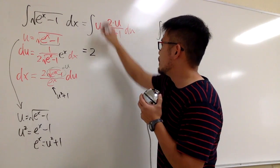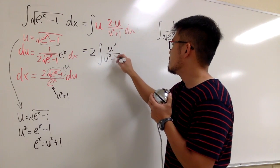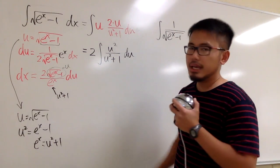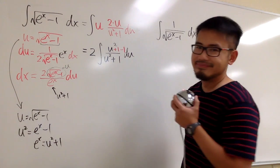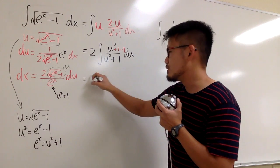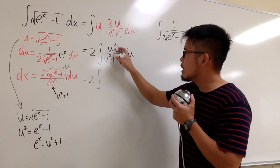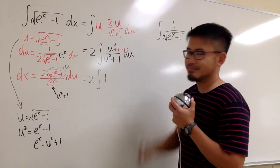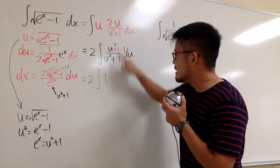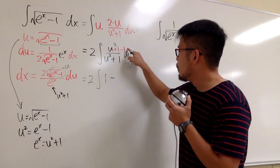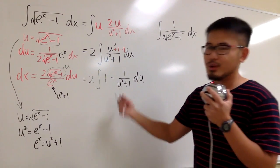Let's put the 2 in the front of the integral. We have the integral of u times u over u squared plus 1, which is u squared over u squared plus 1. To integrate this, we add and subtract 1 in the numerator: u squared plus 1 over u squared plus 1 is just 1, and then we subtract 1 over u squared plus 1. You could do long division, but this trick is much cooler.